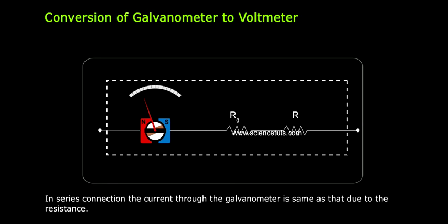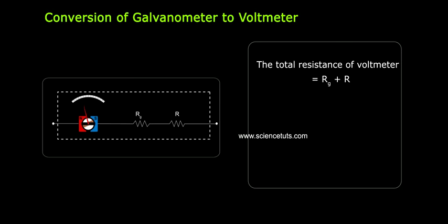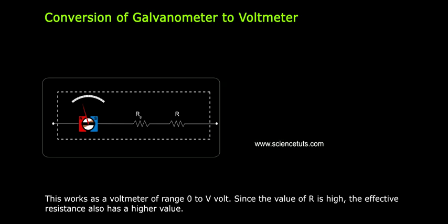In series connection, the current through the galvanometer is same as that through the resistance. The total resistance of voltmeter equals Rg plus R. Ig equals V by Rg plus R. R equals V by Ig minus Rg. This works as a voltmeter of range 0 to V volt.